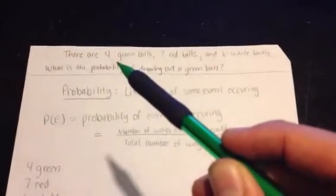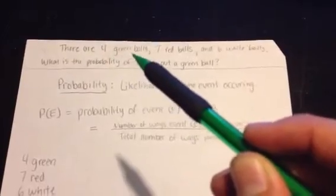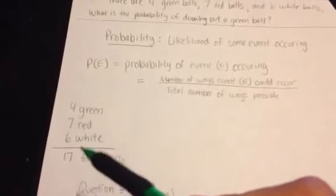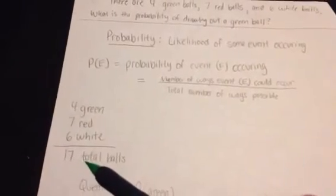So going back to this original problem, if you have four green, seven red, and six white, if you add those all together, four, seven, and six, you end up with 17 total balls in the container.